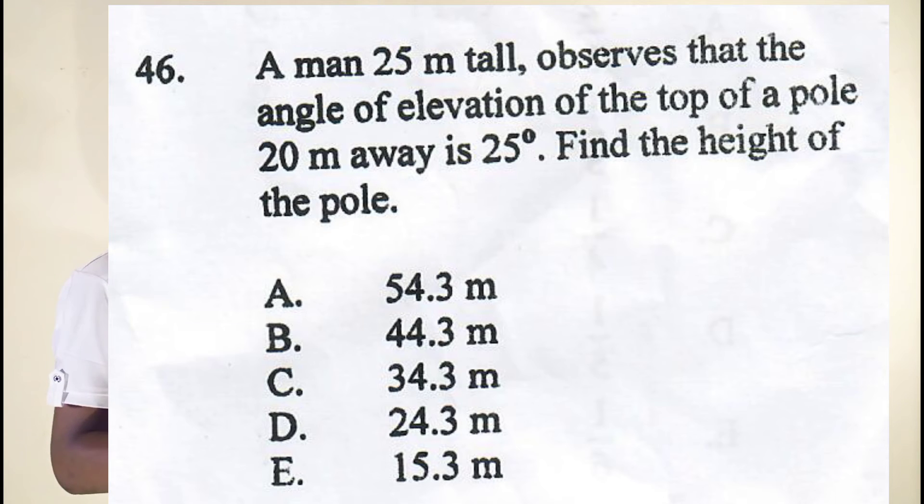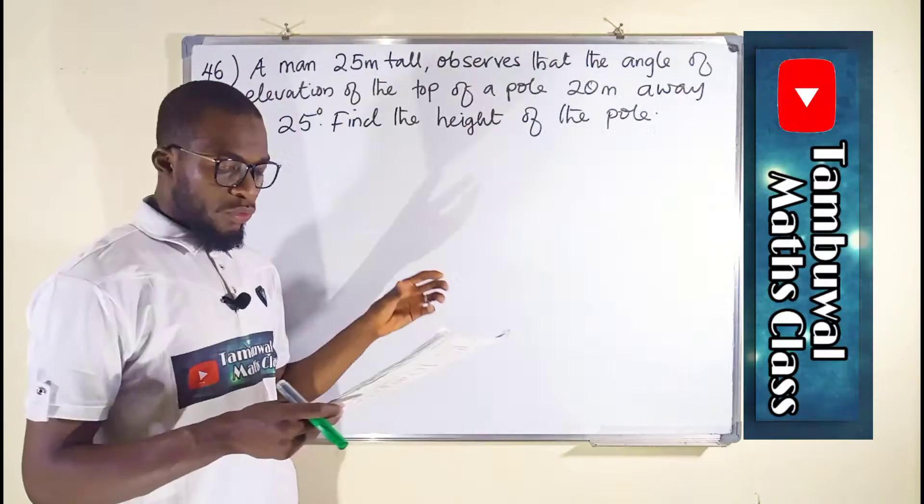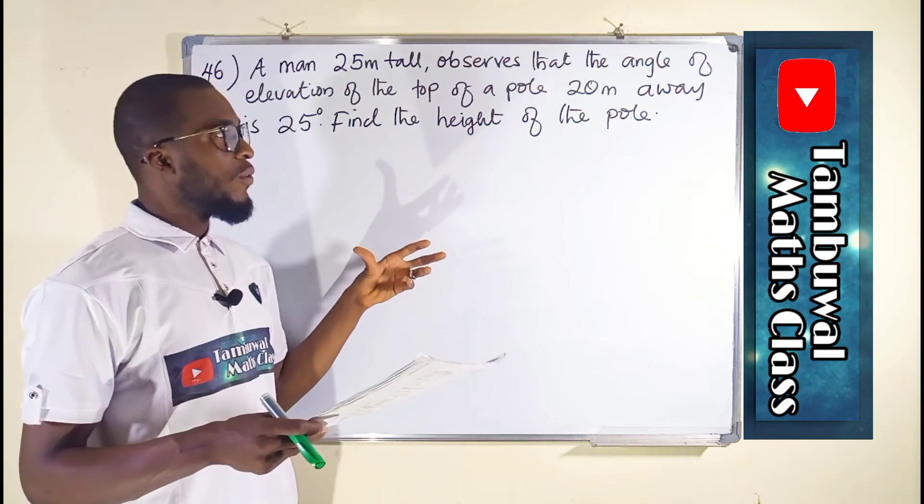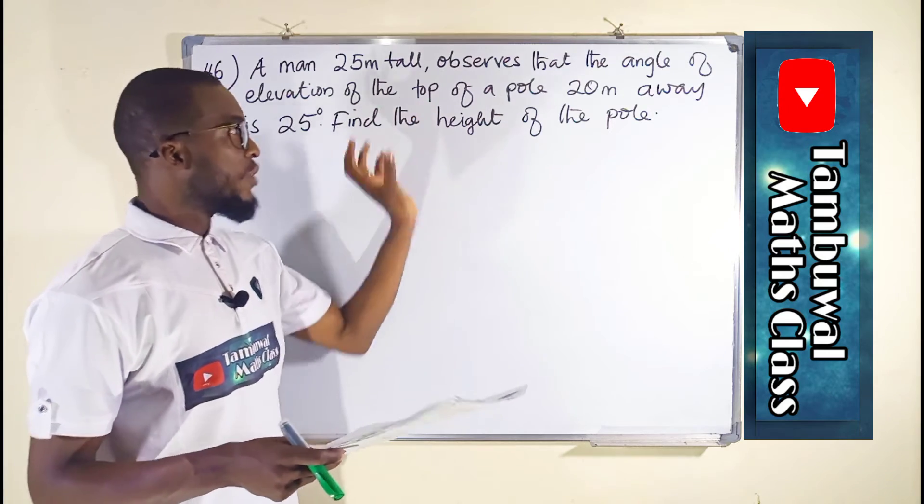It observes that the angle of elevation of the top of a pole 20 meter away is 25 degrees. Find the height of the pole. So now let us make a sketch for the representation of this information.